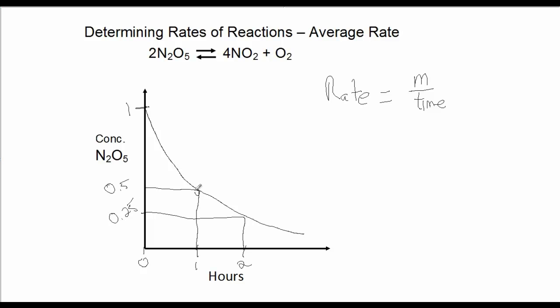So, we can see we have two points on the curve. We selected two points. Now, to determine the average rate of the chemical reaction, it's very similar to determining the slope of a straight line. You take the difference between the concentrations and the difference between the times.